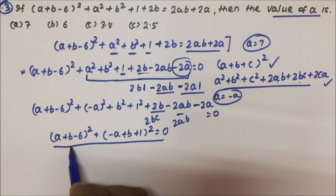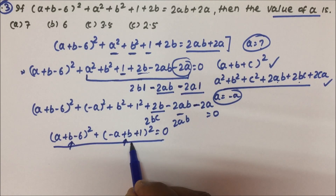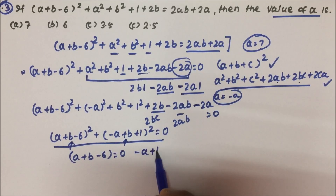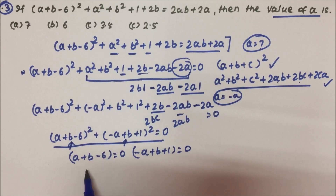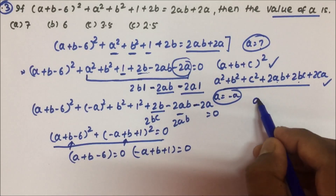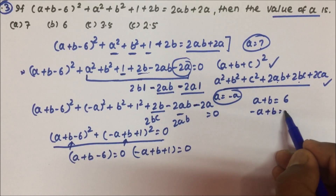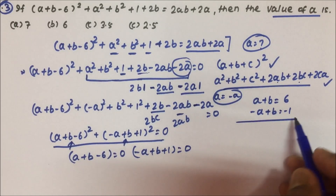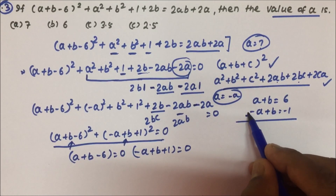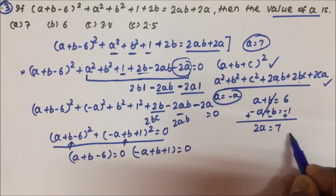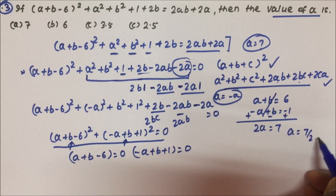Since the sum of two squares equals 0, both terms must equal 0. So a + b − 6 = 0 and −a + b + 1 = 0. From these: a + b = 6 and −a + b = −1. Subtracting the second from the first, 2a = 7, so a = 7/2 = 3.5.